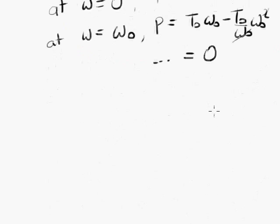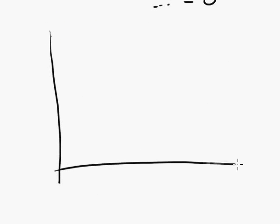So on our speed power graph, then, let's just draw the axes. Omega P, we have an omega of 0. And we have an omega 0 over here. We now know two points on this graph. We know that at a speed of 0, the power is 0. And at a speed of omega 0, the power is 0. So what's happening in between those two points?